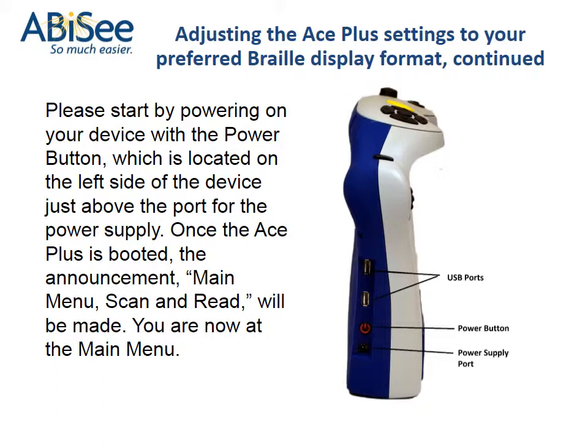Please start by powering on your device with the power button, which is located on the left side of the device just above the port for the power supply. Once the Ace Plus is booted, the announcement — main menu, scan, and read — will be made. You are now at the main menu.